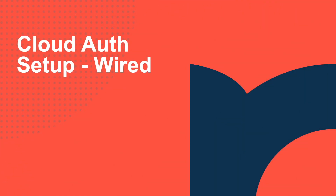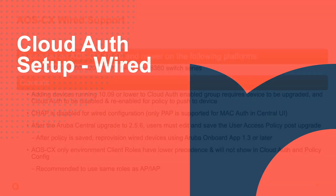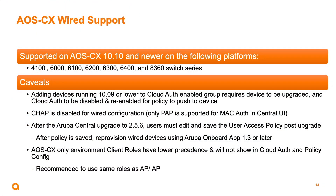Now that we've shown the successful authentication and association of a wireless device to a cloud auth-enabled wireless network, let's jump into setting up our cloud auth solution for a wired device. Please note that at this time, support for AOS-CX devices utilizing the Aruba Central Cloud Authentication solution is limited to AOS-CX devices running version 10.10 or newer on the following platforms: the 4100, the 6000, and the 8360 switch series. Adding devices running firmware version 10.09 or lower to a cloud auth-enabled AOS-CX group requires that device to be upgraded first to 10.10 or newer. CHAP is disabled for wireless configuration and the Mac auth setup for the central user interface — only PAP is supported.